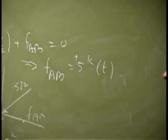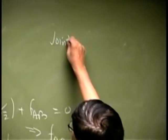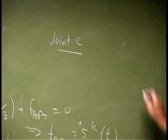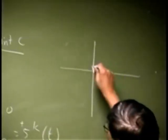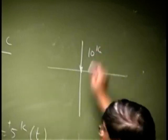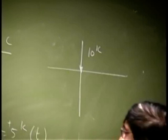So that was joint A. Then, let us see if you go to joint C. If I go to joint C, there is a force coming in, just 10 kips, then the AC.